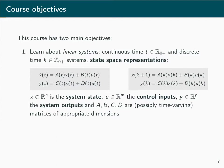In both cases, x is an n-dimensional vector that contains the system states, u is an m-dimensional vector that contains the control inputs, and y is a p-dimensional vector that contains the system outputs. A, b, c, and d are possibly time-varying matrices that have appropriate dimensions.